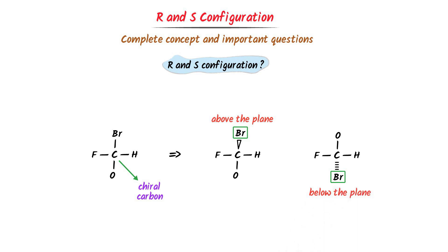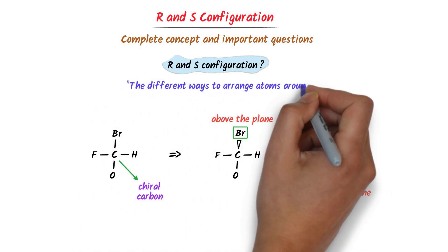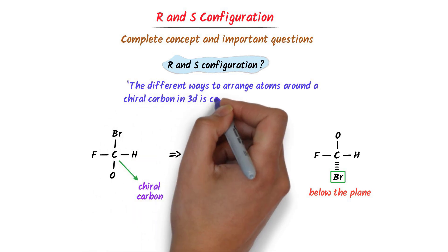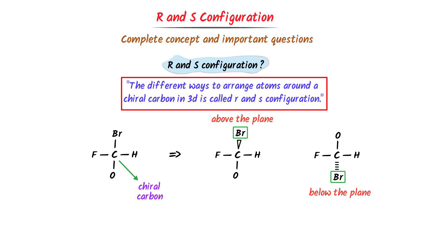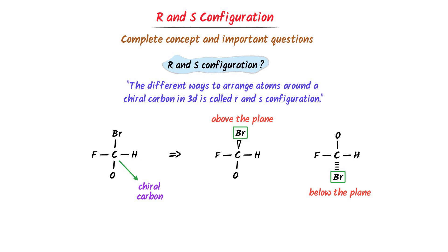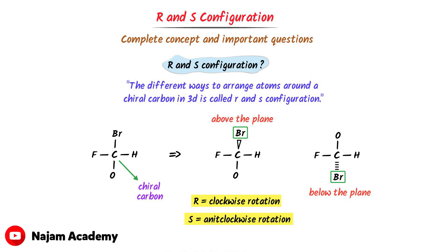Thus, there are two possible structures of this organic compound in 3D. Therefore, we define R and S configuration as: the different ways to arrange atoms around a chiral carbon is called R and S configuration. Remember that R stands for clockwise rotation and S stands for anticlockwise rotation.